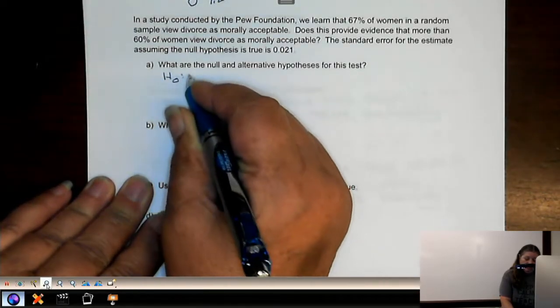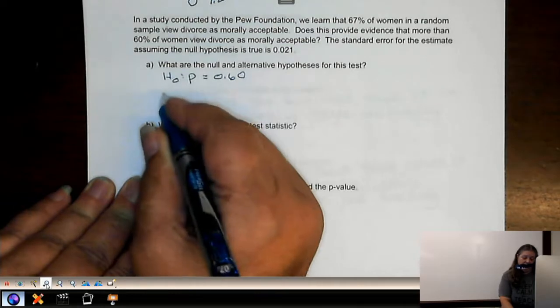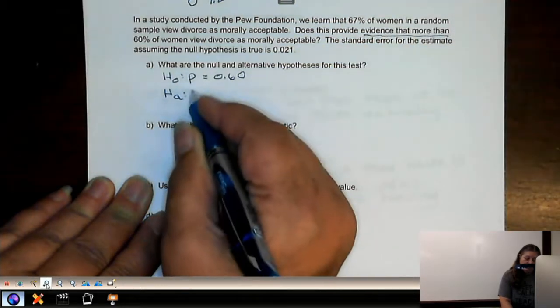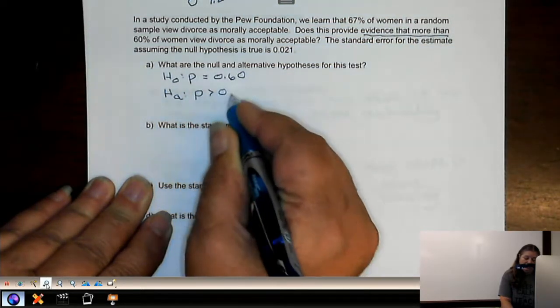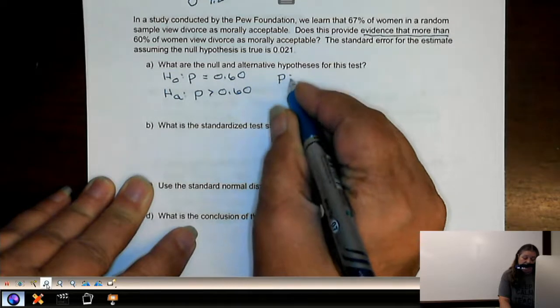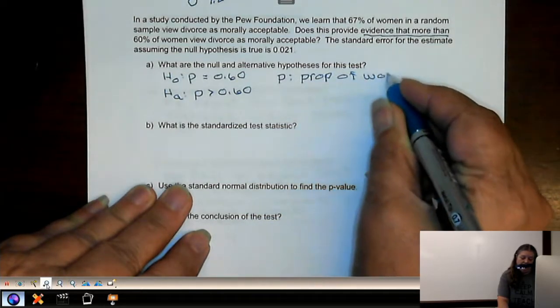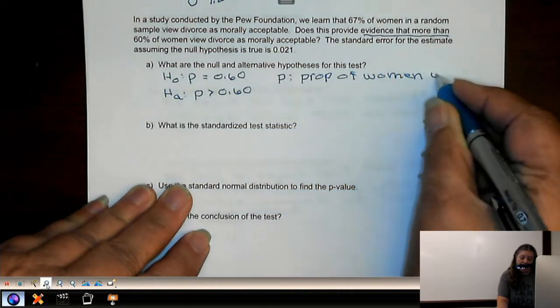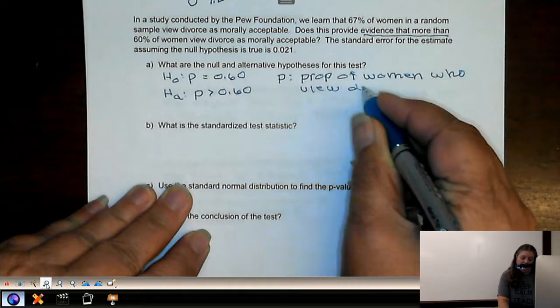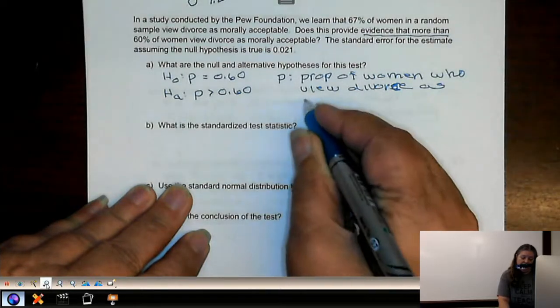So the null and alternative. The null would be that the proportion equals 0.6. The alternative, it says evidence that more than 0.6, so p is greater than 0.6. And then we should define the parameter. So p is the proportion of women who view divorce as morally acceptable.